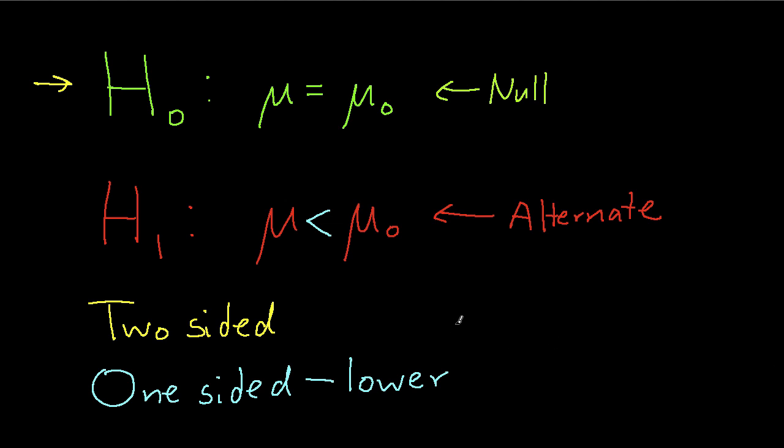Or you can also imagine that I might look at the case where I have a one-sided test, where I'm testing whether or not the population mean is greater than mu zero. This would be an upper one-sided test.